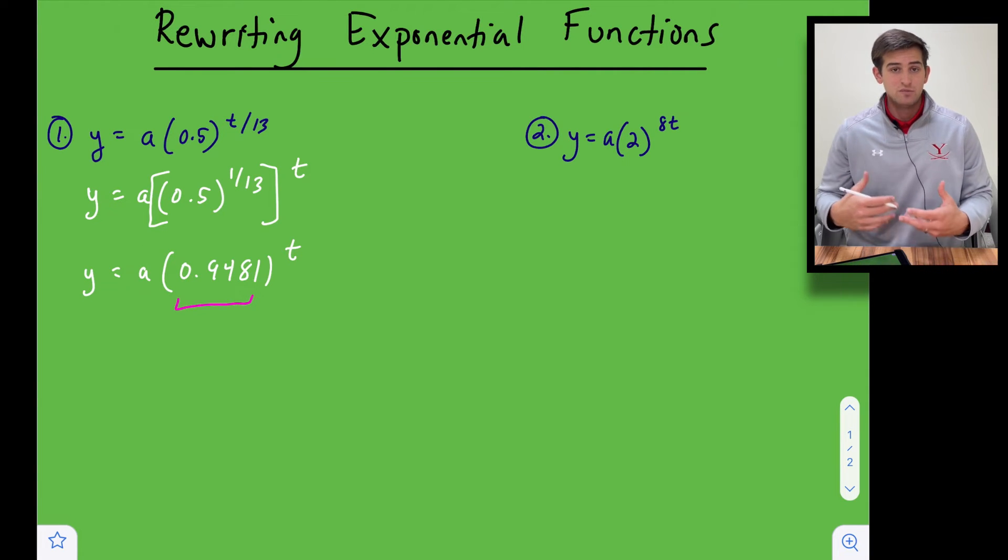Well if that's less than one then we know we had percent decay or exponential decay. If that were greater than one that would be percent growth, because we know for exponential growth our equation is one plus r so our growth factor would be greater than one, whereas for exponential decay our equation says one minus r so our decay factor would be less than one and that's what we see right here.